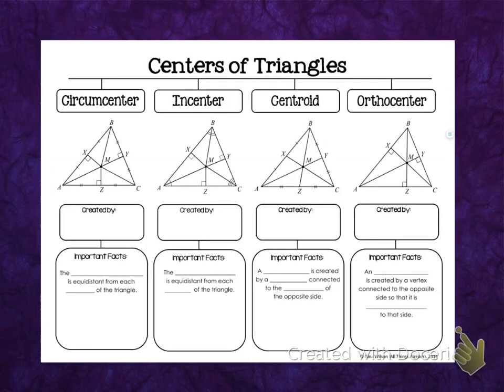Your notes for centers of triangles will be written on this handout, which you should have received last class. We're going to be filling it in together. We have different centers of triangles listed at the top: the circumcenter, the incenter, the centroid, and the orthocenter. Basically, each of these centers is formed by different lines created in the triangle that meet at a point, giving each center its specific name. We're going to go through each one.